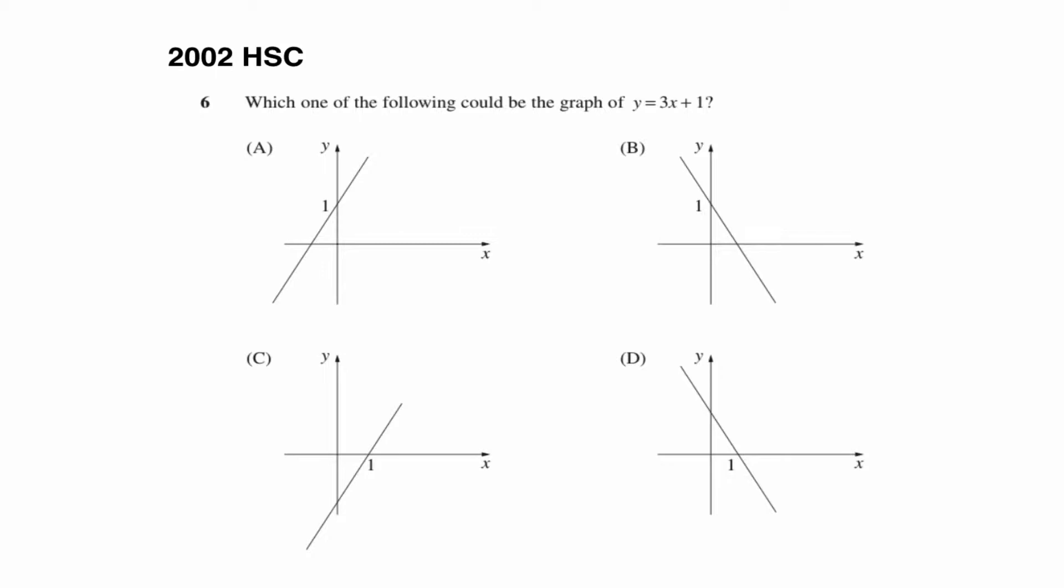So this is from the 2002 HSC. Which one of the following graphs could be a graph of y equals 3x plus 1? Well, that's in y equals mx plus b form, so we know the gradient is 3 and the y intercept is 1.